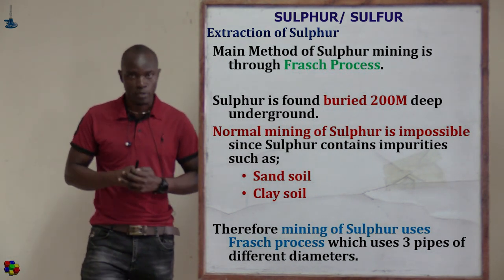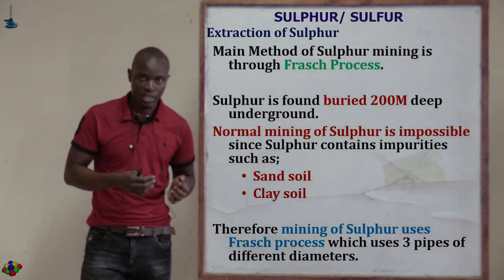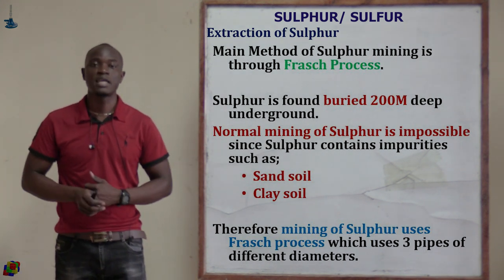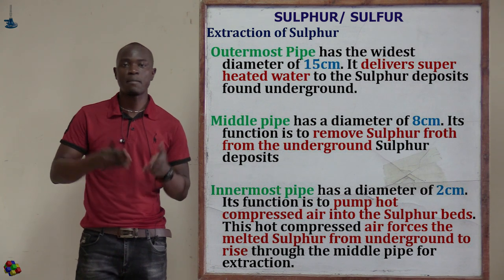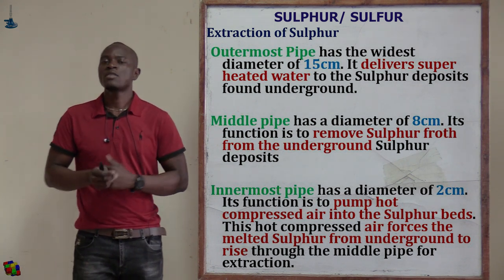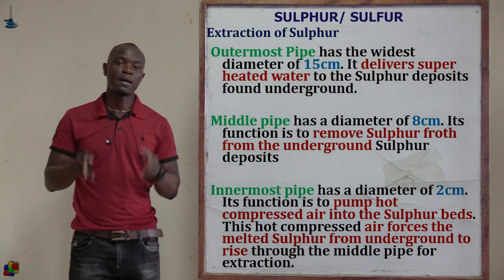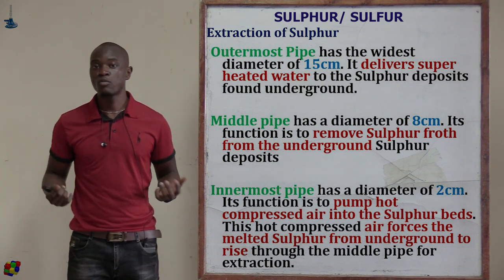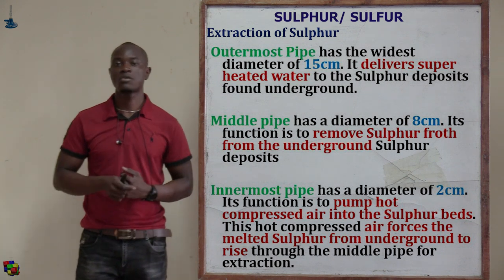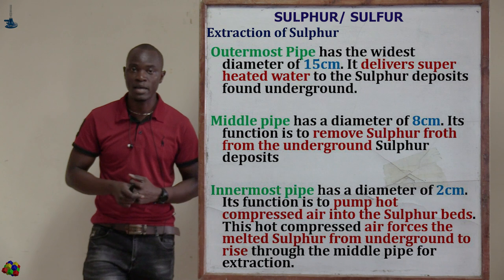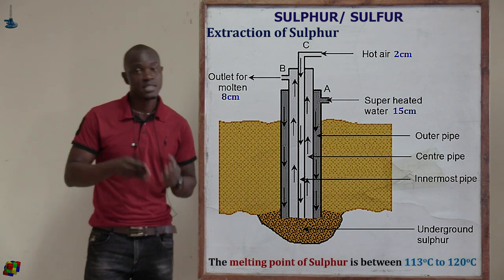Extraction of sulfur uses the Frasch process, which takes advantage of separating sulfur as a free element. Three pipes of different diameters are used: two centimeters, eight centimeters, and fifteen centimeters. The outermost pipe pumps superheated water, the innermost pipe pumps air, and the middle pipe pushes the sulfur froth from underground up to the surface.